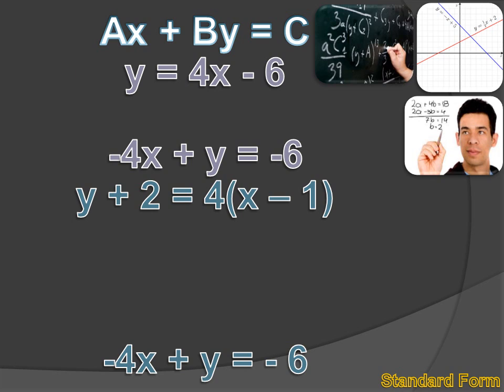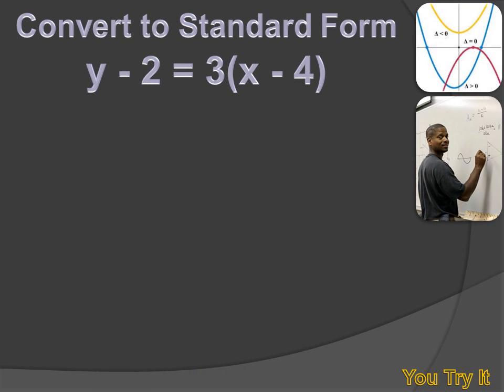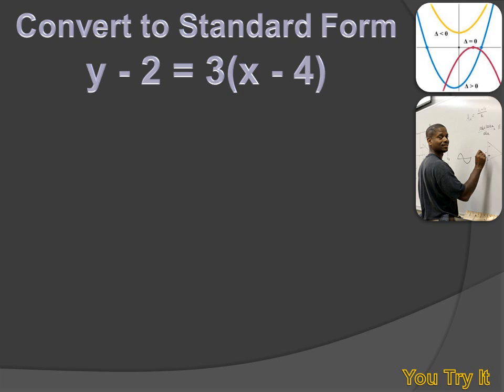This is slope-intercept form, this is standard form, and this is point-slope form. You try this one — hit your pause button, try the problem, and then hit the forward key to move on to my answer.